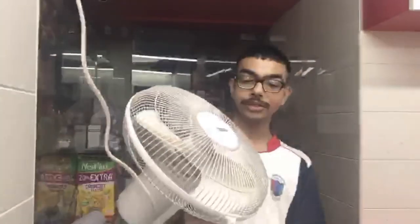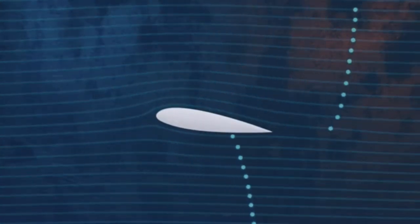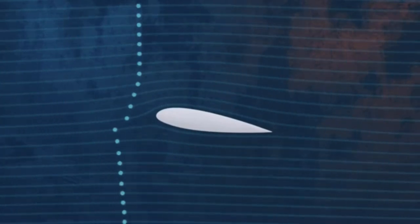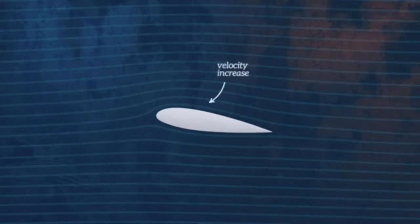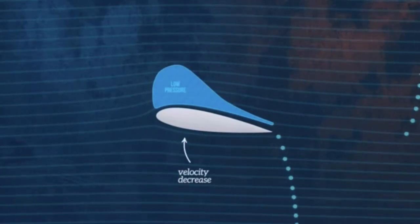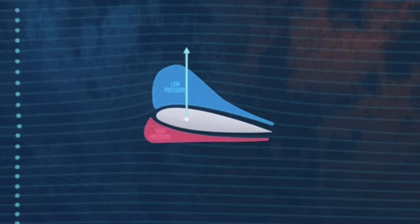Now we are going to use this fan to simulate airflow around the aerofoil. As you saw from the experiment, the wing lifts up in the air. This happens because as the wing moves through the atmosphere, the air flows faster above the wing than below it. Due to the aerofoil shape, there is a velocity increase on top creating low pressure above, and a decrease in velocity below creating high pressure below the wing. This pressure difference causes lift and the wing rises.